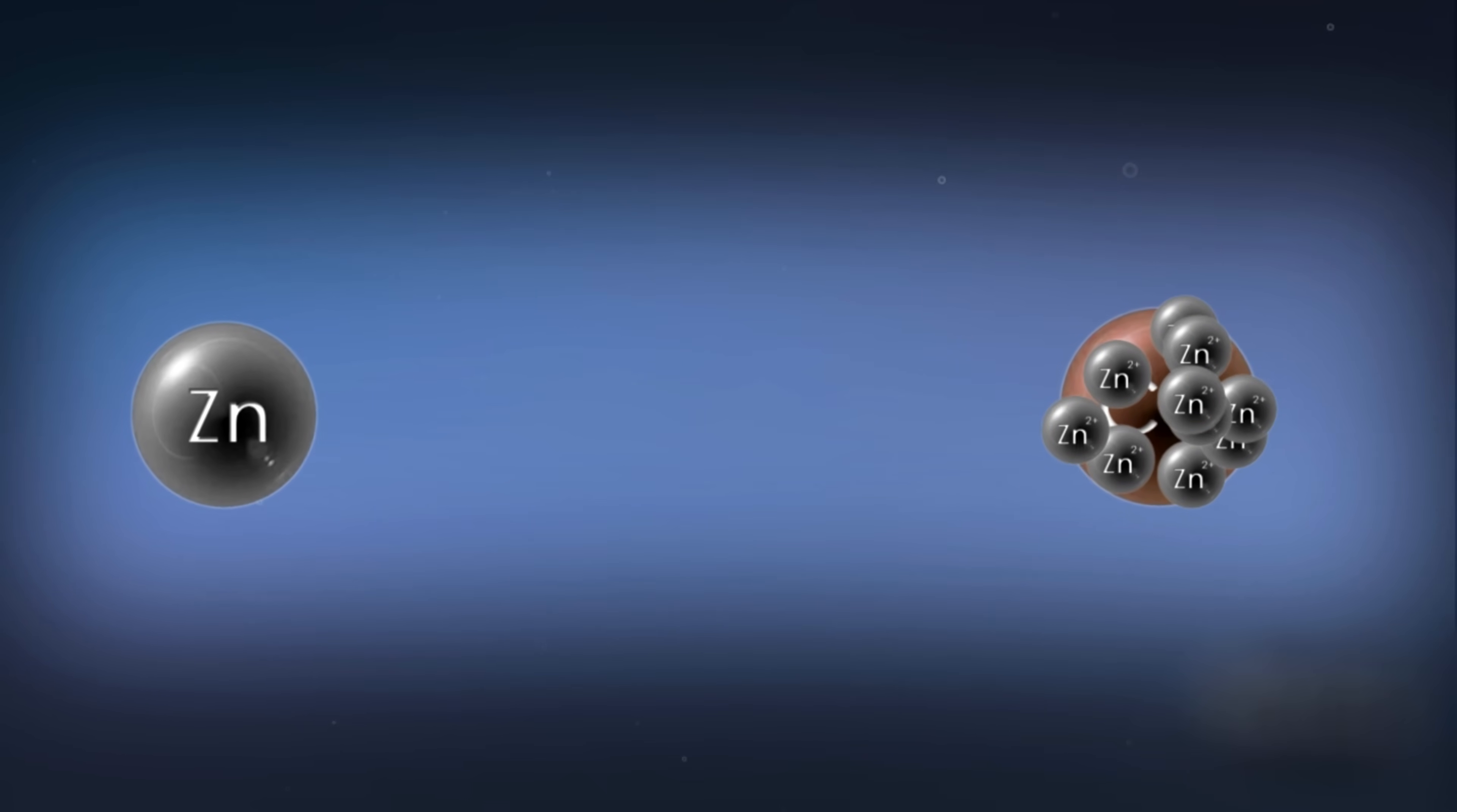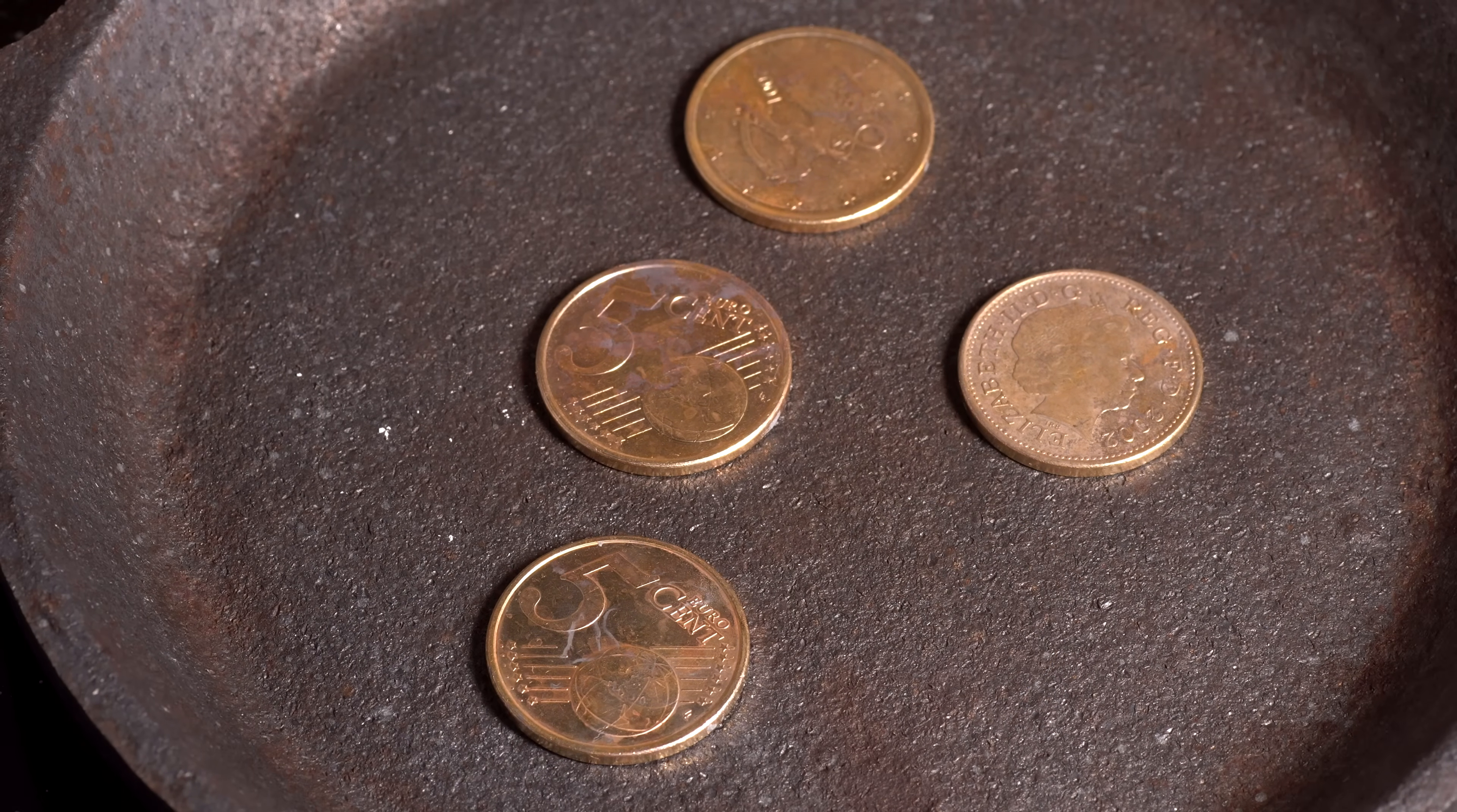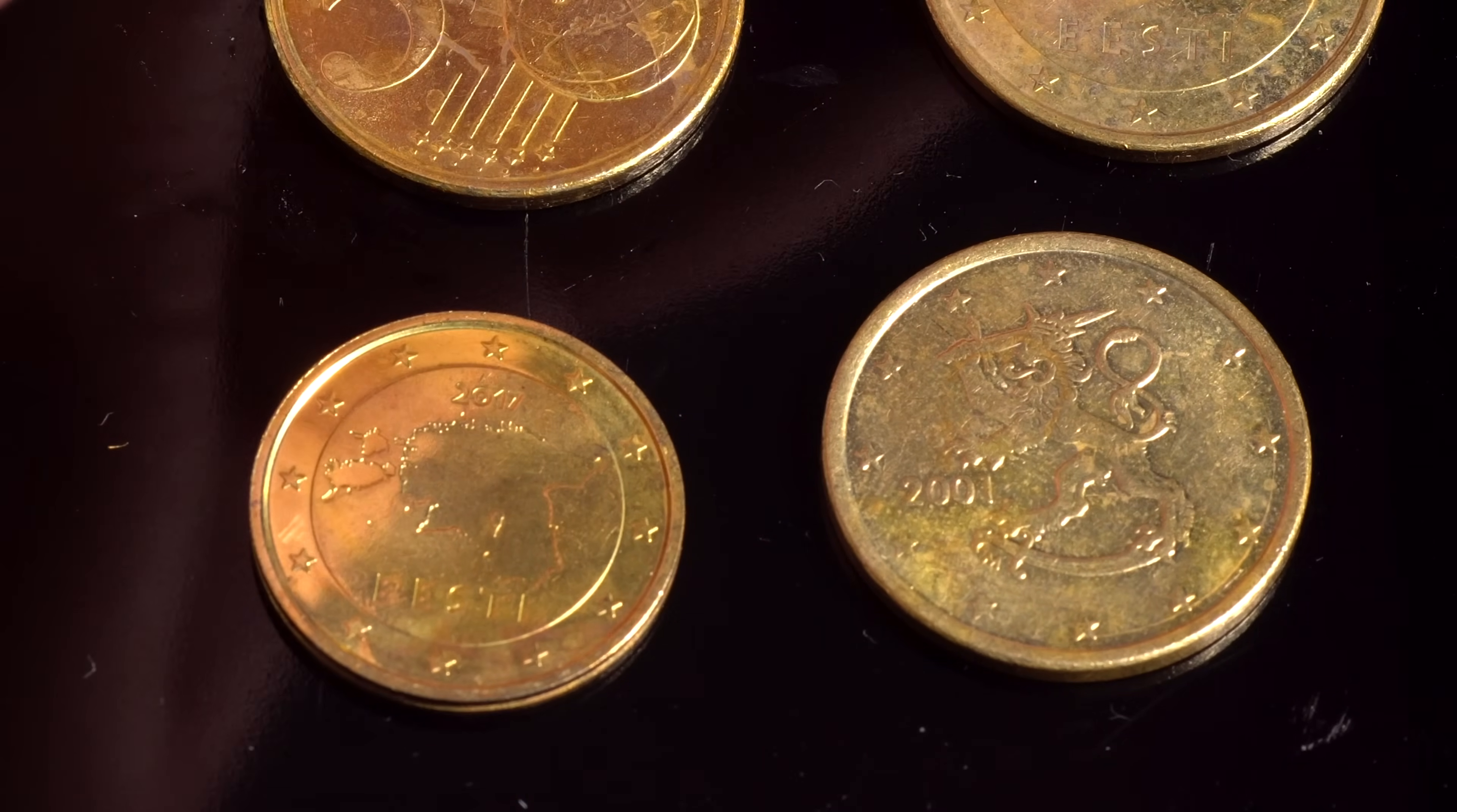However, if such galvanized coins are heated, this will cause diffusion of zinc into copper. As a result, brass forms on the surface of the coins, which has golden color and looks like gold. Such an experiment is ideal for pranking your friends by making them believe these are indeed gold coins.